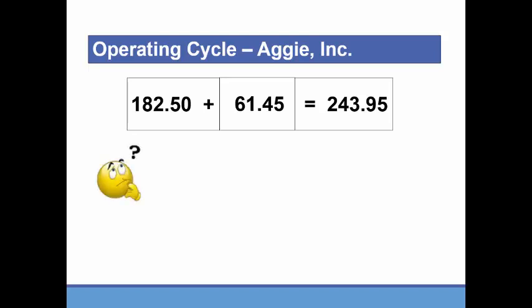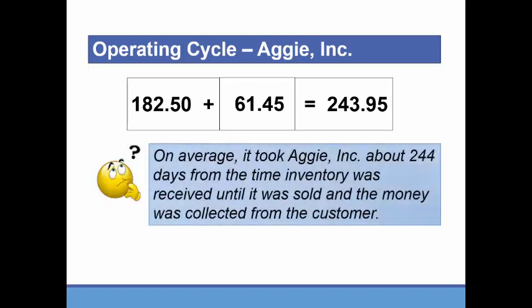So what can management conclude? On average, it took about 244 days to complete an operating cycle from receiving the inventory to collecting the cash.